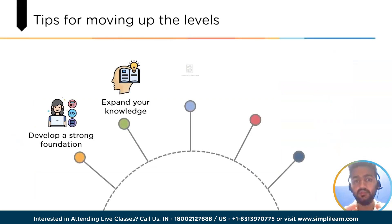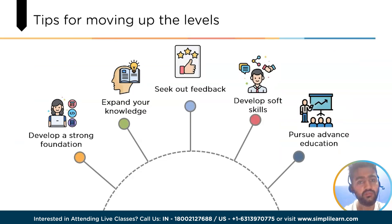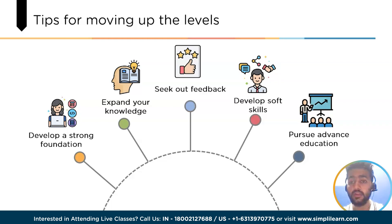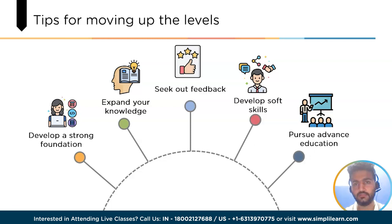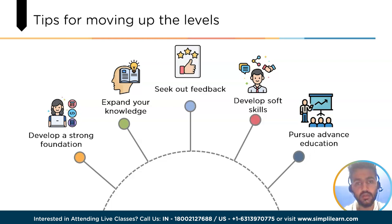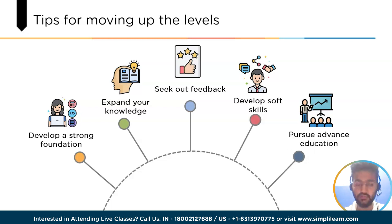Now let's have a look at some tips for moving up the levels. If you're a software engineer who wants to advance in your career, there are several steps you can take. First and foremost, it's important to have a strong foundation in the core concepts of software engineering, including data structures, algorithms, design patterns, and programming languages. To keep up with the ever-changing landscape of software engineering, you will need to continually expand your knowledge, attend conferences, read technical blogs, and participate in online communities to stay up to date with the latest technologies and industry trends.